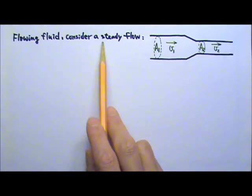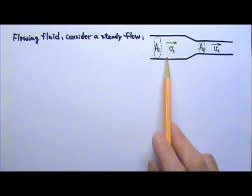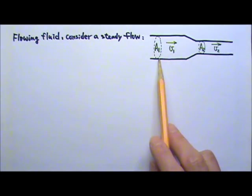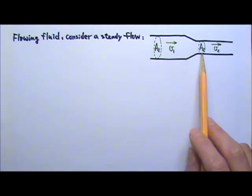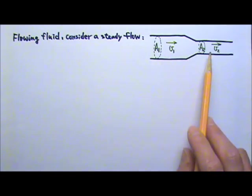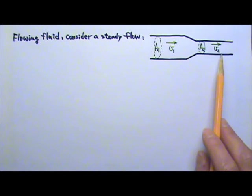Now let's consider a steady flow of fluid through a pipe with different cross-sectional areas. If the cross-sectional area A1 is larger than the cross-sectional area A2, which flow speed must be faster, V1 or V2?